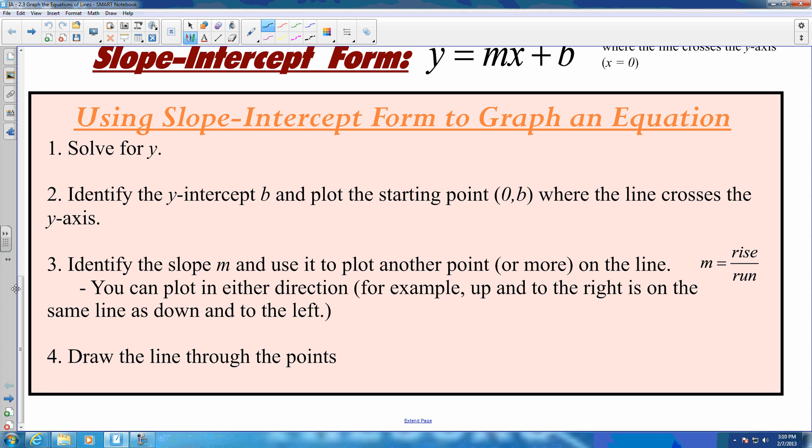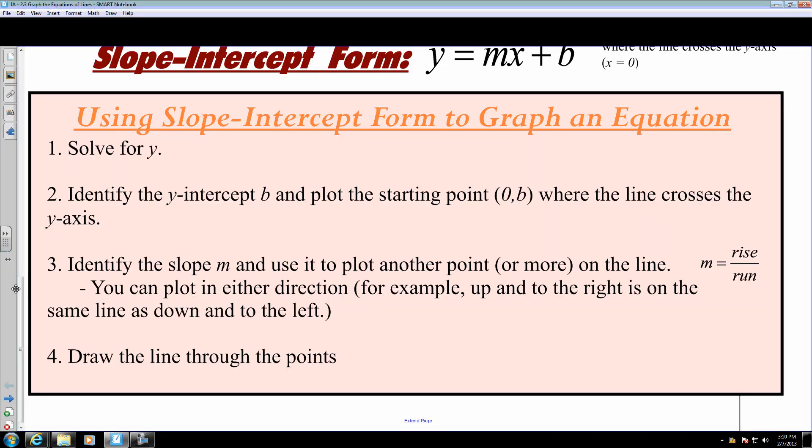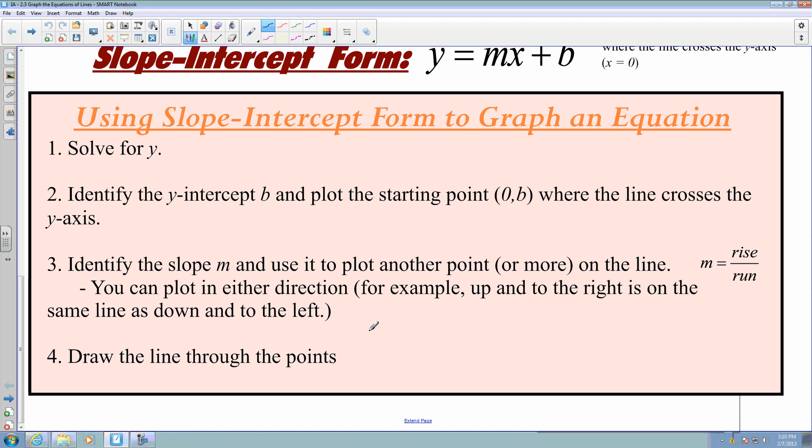Now I'm going to explain what we do in order to create a graph using slope-intercept form. First off, we have to solve for y. Second step is we have to identify the y-intercept, which is represented by b. Once we do that, we can then plot that starting point at 0, b. Afterwards, we can identify the slope of m in the form of rise over run, plot that point, and then draw our line.